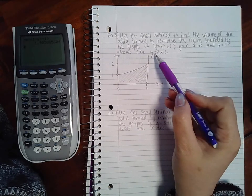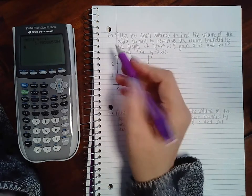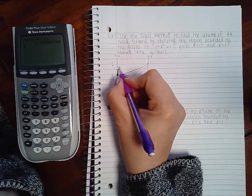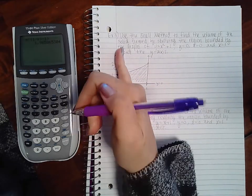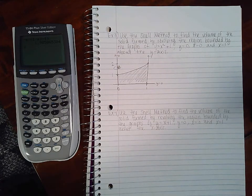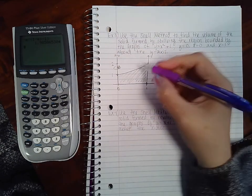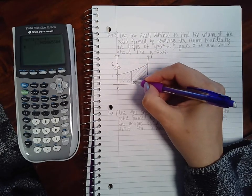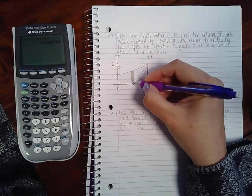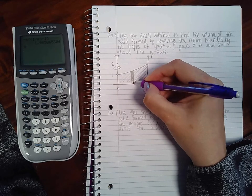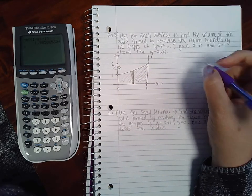And I am revolving about the y-axis. So I am actually revolving in this direction, which means I have a vertical line of revolution. And if I'm using shell method, I need to use a parallel rectangle, which means my rectangles should also be vertical.